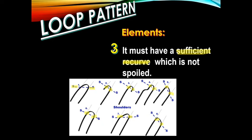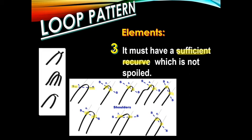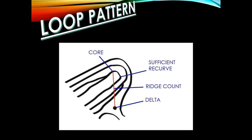If you observe here, there are no appendages. When we talk about appendages, these are ridges which appear at a right angle on the outside of the recurve or on the top or summit of the recurve or the loop. In other words, these are not considered as elements of the loop pattern, but these constitute the sufficient recurve. So the elements of a loop pattern are: first, it must have a delta and a core; second, it must have a ridge count of at least one with intervening ridges between the core and the delta; and the last element is that there must be a sufficient recurve free from any appendage.